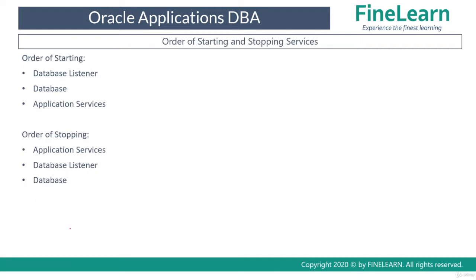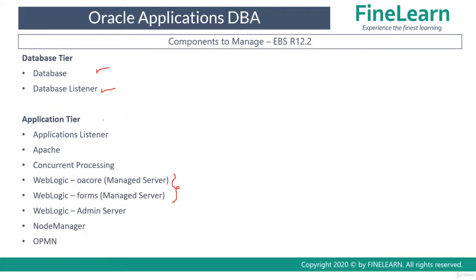Now let us see what is the order of starting. When you are starting the services of Oracle E-Business Suite, first you have to start the database listener, then start the database, then the application services — meaning all of the application tier components mentioned.